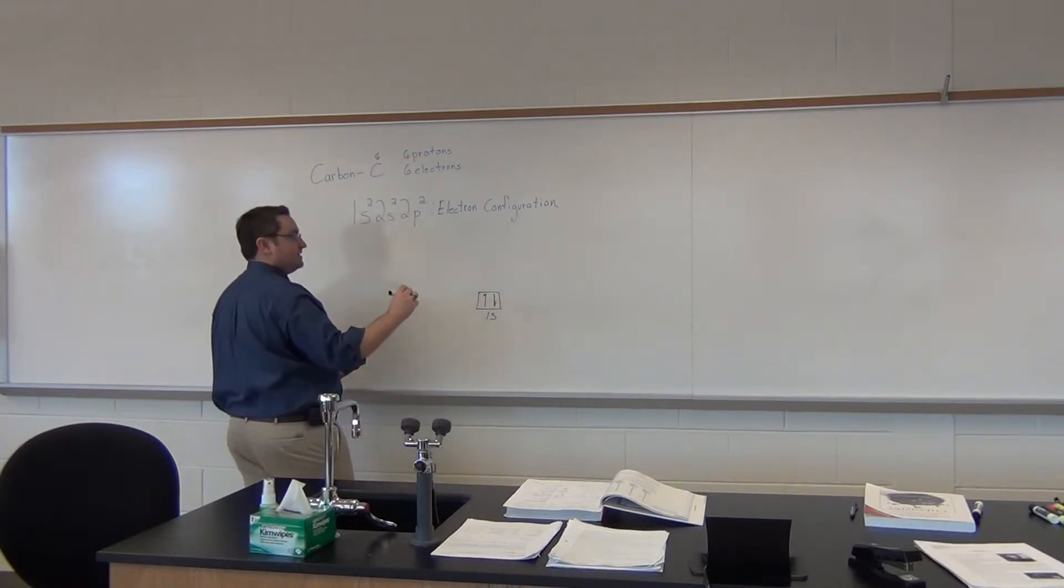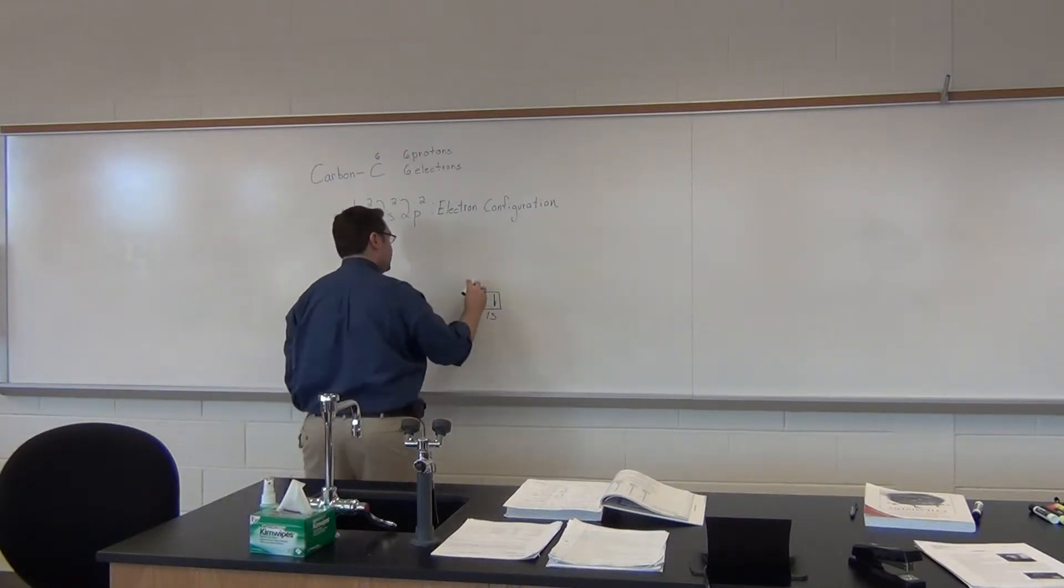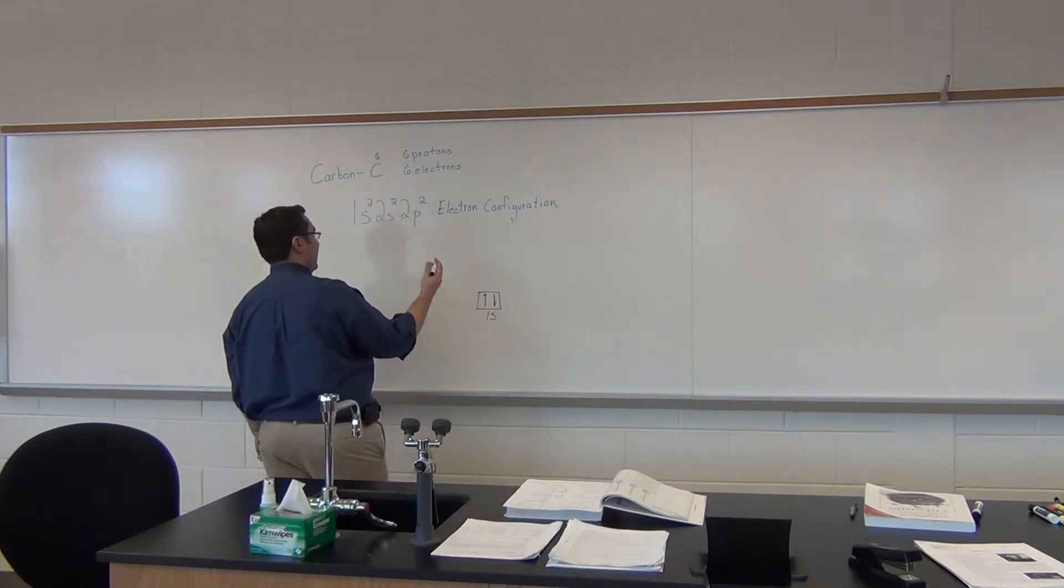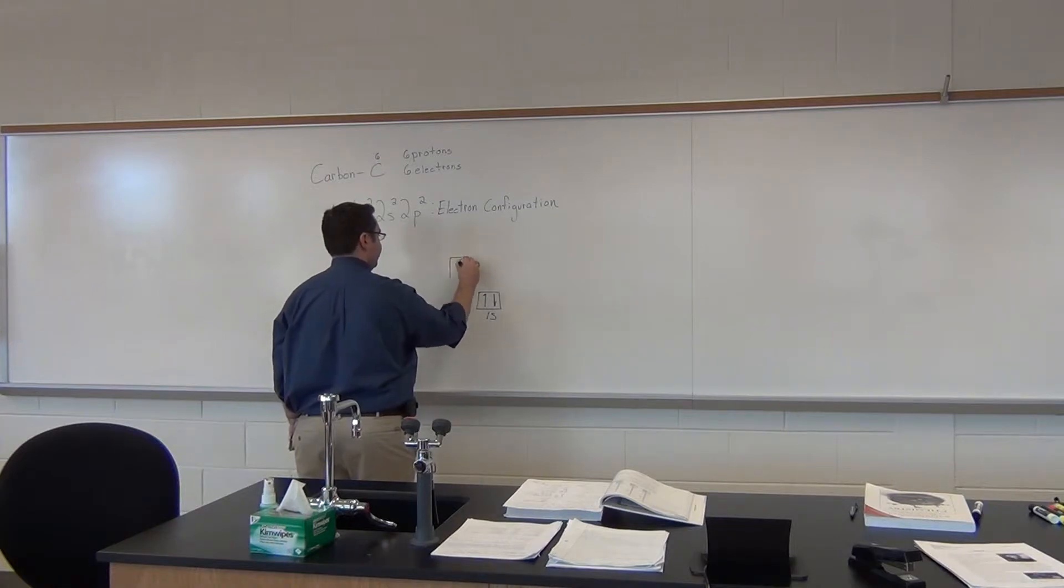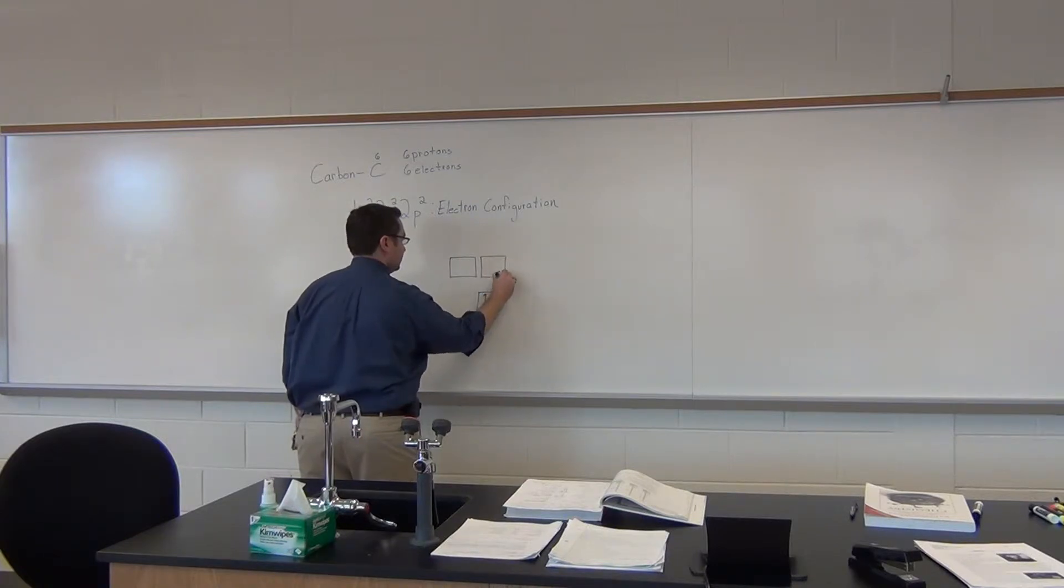So this would be your 1s. When you get to the 2p it holds a maximum of how many in the whole? Six. Six, but you're going to have three of your boxes.